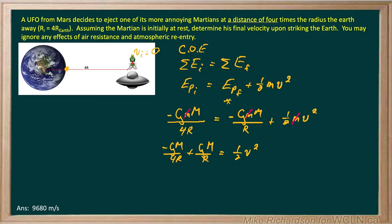So we've got GM and r that are common in both terms. So I'm going to factor out a GM over r. So GM over r. And what am I left with? Well, I'm left with negative one fourth for the first one. And a one for the second one. And all that equals one half v squared.